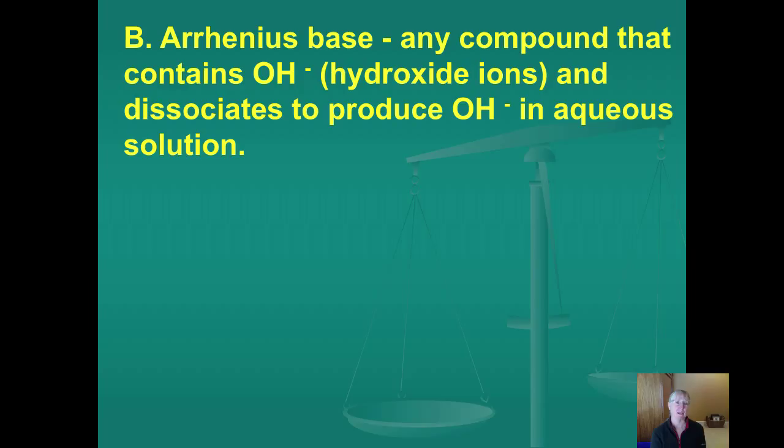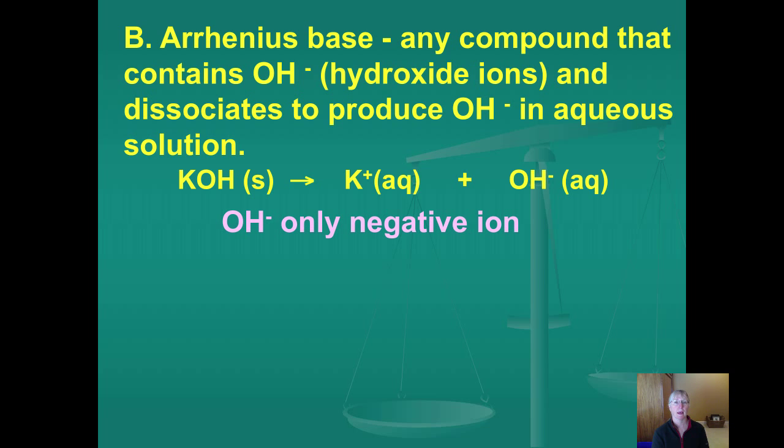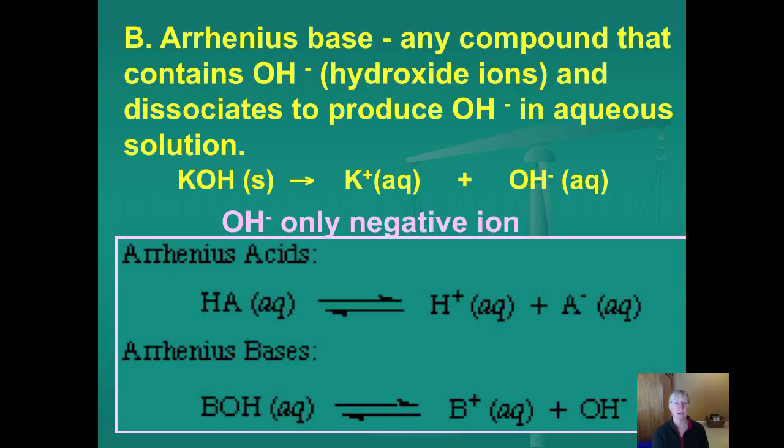And Arrhenius base is anything hydroxide, usually something metallic hydroxide, like sodium hydroxide or calcium hydroxide. And you would find hydroxide ions in solution. So it doesn't show water over the arrow, but if you put potassium hydroxide in water, it will split up to produce potassium ions and hydroxide ions. And it's a negative ion.